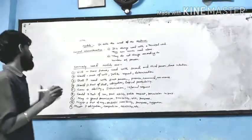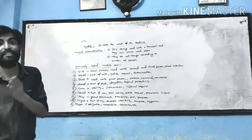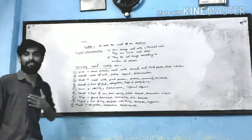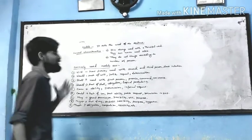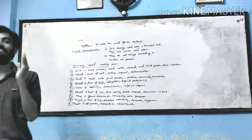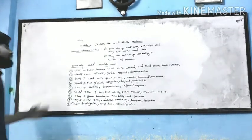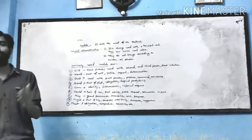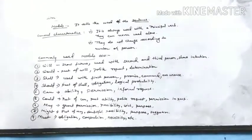'Can' is used to show ability — for example, 'I can do it' — as well as permission, for example 'Can I go?' It also shows informal request. If you want to make any informal request, you will use 'can.'